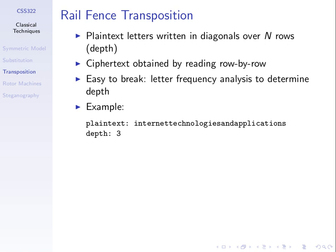Frequency analysis can be applied because the letters in the ciphertext are the same letters as in the plaintext — the same frequency of letters occurs. In our plaintext there are four E's, and in the ciphertext there are four E's, and similarly for all other letters. In a large plaintext, we will see the same frequency of letters in the ciphertext as in the plaintext. Using that information, we can work out what the depth — the key — may be. Once we find the depth, it's easy.